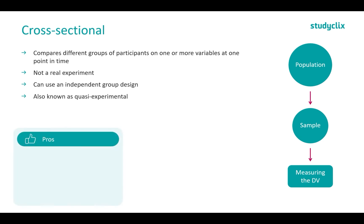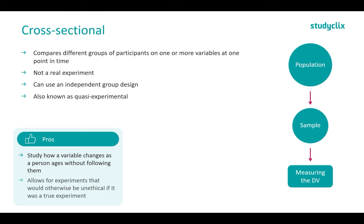The good thing about cross-sectional design is we can study how a variable changes as a person ages without following them. We can take a sample of people who are 30 and a sample of people who are 15, and see how the dependent variable differs across those age groups — in contrast to following 15-year-olds until they're 30. This helps take away some of the costs and time. It also allows for experiments that would otherwise be unethical, such as studying people with depression without giving anyone depression.